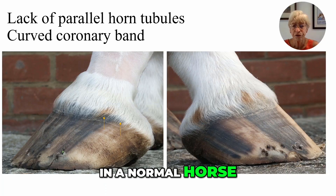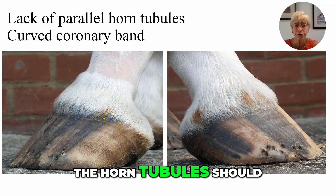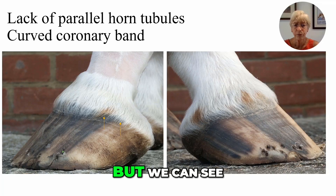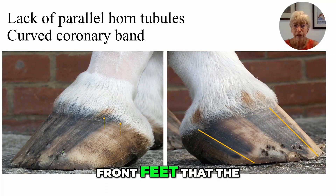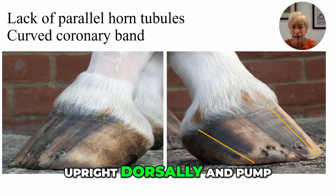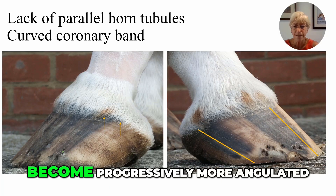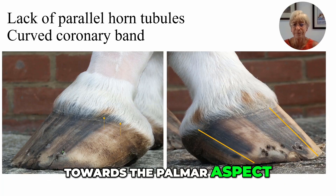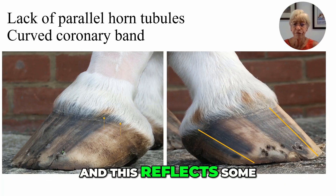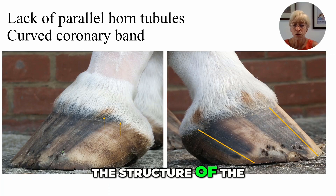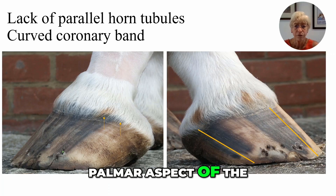In a normal horse, the horn tubules should be parallel from dorsal to palmar. But we can see very clearly in both the left and right front feet that the horn tubules are more upright dorsally and become progressively more angulated towards the palmar aspect of the foot, and this reflects some degree of weakness of the structure of the palmar aspect of the hoof capsule.